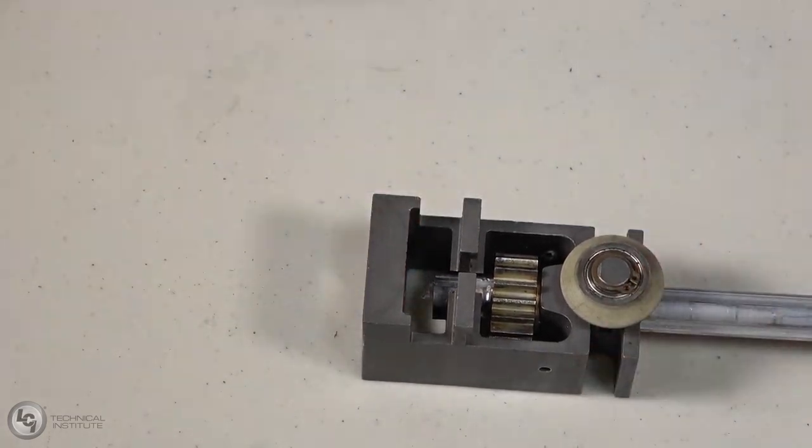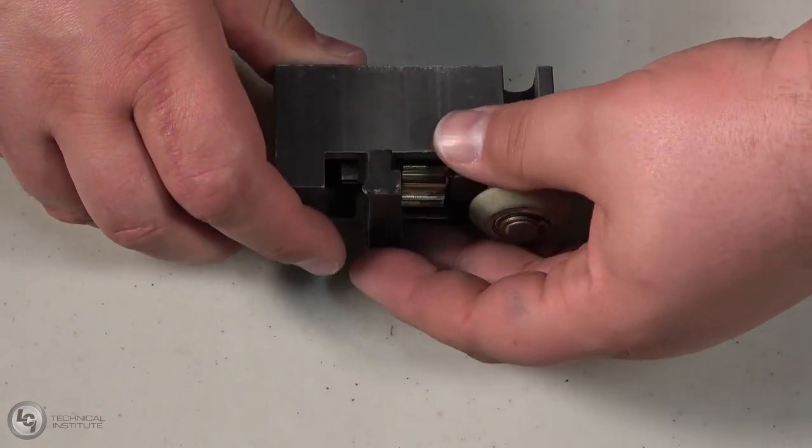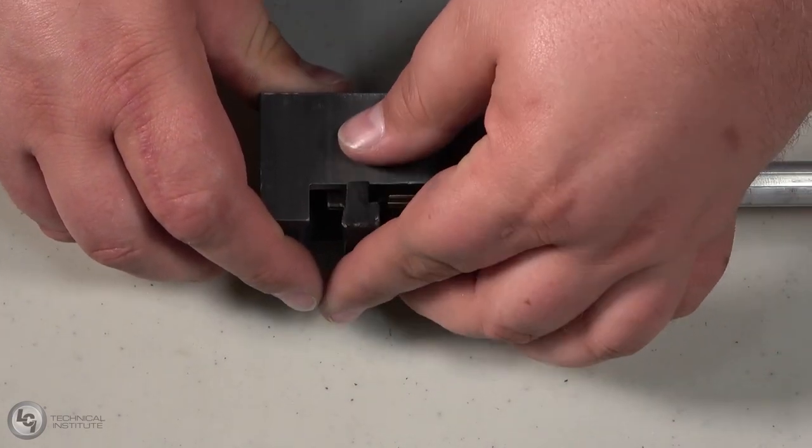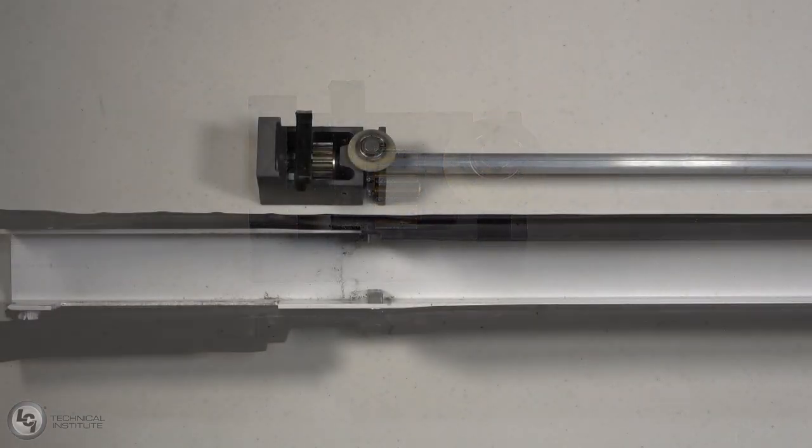Next, we will install the shoes onto the bearing blocks. These should just click into place. If you are rebuilding with the inverted system, it will face the opposite direction and this one will clip over the foot of the bearing block instead of clicking into place.